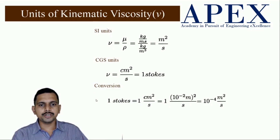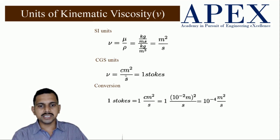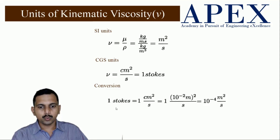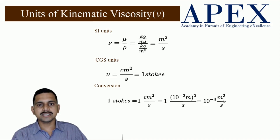Now let us see the units of kinematic viscosity. In SI units, nu (kinematic viscosity) equals dynamic viscosity divided by density, giving units of meter square per second. In CGS units it becomes centimeter square per second, which is called one stoke. One stoke equals 10 to the power minus 4 meter square per second.